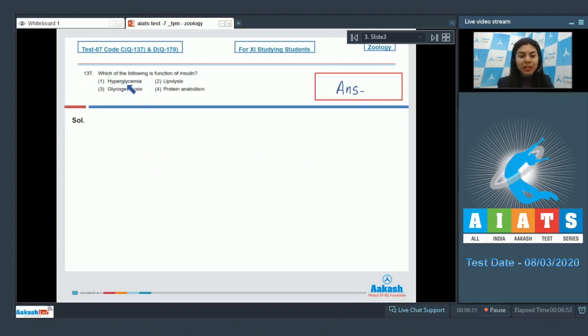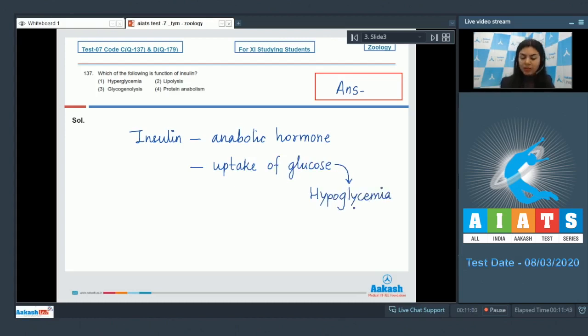Question 137: Which of the following is a function of insulin? Hyperglycemia, lipolysis, glycogenolysis, protein anabolism. If you talk about the mode of action of insulin, insulin acts as an anabolic hormone. It facilitates the uptake of glucose by the cells which would lead to hypoglycemia, thus option number one hyperglycemia would be incorrect. Option number two, lipolysis, this is the process to break down fats to release fatty acids and triglycerides which are substrates for energy production, so this is also incorrect.